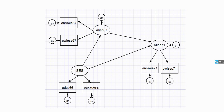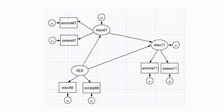This model comes from example 7 in the Stata user's guide. We have three latent variables: SES, Alien67, and Alien71, with two indicators associated with each. Anomia67 and Powerlessness67 indicate Alien67; Educ66 and occupational status 66 serve as indicators of SES; and Anomia71 and Powerlessness71 serve as indicators of Alien71. By the way, Alien is short for alienation.